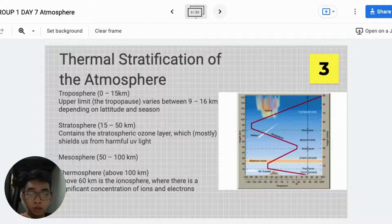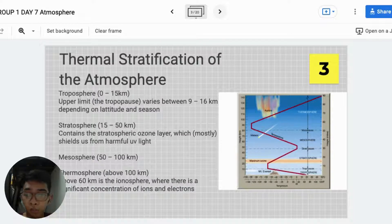15-50 km from the atmosphere. Contains the stratospheric ozone layer, which shields us from harmful UV light.